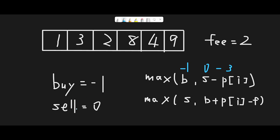For sell profit on the second day: if we don't sell, current max profit is 0. If we sell, current buy max profit is -1, so -1 + 3 - 2 (transaction fee) = 0. So sell profit remains 0.